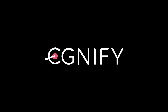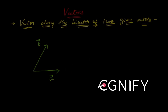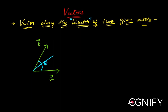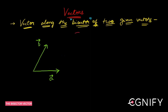Coming to the next subtopic: what is the vector along the bisector of two given vectors? The term bisector means a vector which passes through such that it divides the angle theta into theta by 2 and theta by 2. Such a vector r̄ is called the bisector of vectors ā and b̄. The challenge is to find what this vector r̄ looks like.